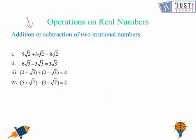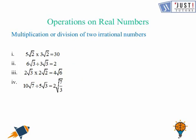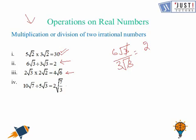Now we discuss addition and subtraction of two irrational numbers — remember, the answer may be rational or irrational. When you add two irrational numbers, the answer may be irrational, but it can also be rational. When you subtract two irrational numbers, the answer may be irrational or rational. Similarly for multiplication and division: multiplying two irrational numbers can give a rational number or an irrational number; dividing two irrational numbers can also give either a rational or an irrational result.